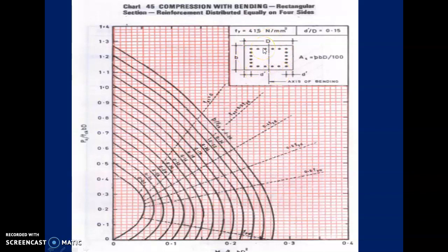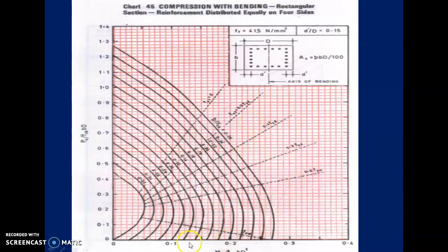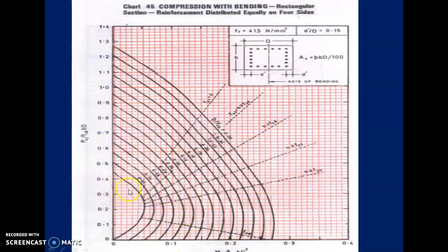From the chart: Pu/(fck·B·D) = 0.367 and Mu/(fck·B·D²) = 0.125. We go to 0.125 on the y-axis and 0.36 on the x-axis, move up to the intersection point, and identify which curve this point falls on. That curve value is your p/fck. In this case the intersection is at p/fck = 0.115, giving percentage of steel p = 0.115×25 = 2.875%.